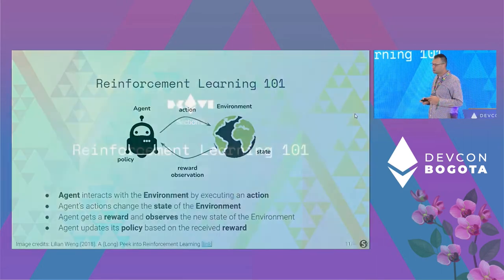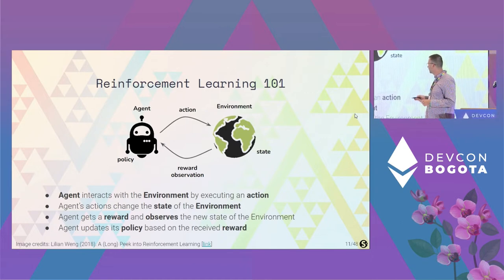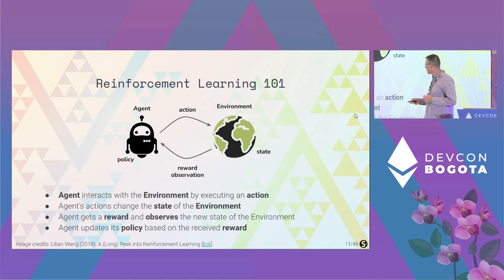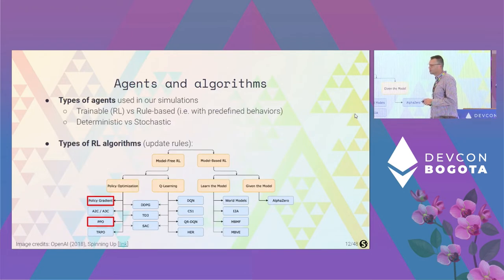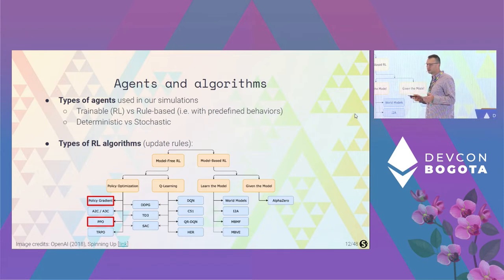In reinforcement learning, we have two main entities: agents and environments. Agents interact with the environment by executing an action; those actions change the state of the environment, and agents receive rewards and observations. Agents can then update their policy based on the received reward. We use different types of agents: trainable RL agents using online learning, rule-based agents with predefined behaviors, and agents that are stochastic or deterministic.